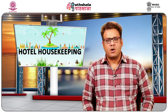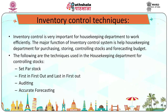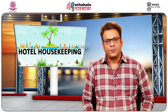Now we can discuss inventory control techniques. Inventory control is very important for the housekeeping department to work efficiently. The major functions of an inventory control system are to help the housekeeping department with purchasing, storing, controlling stocks, and forecasting budgets. The techniques used in the housekeeping department for controlling stocks are: number one, set par stock; number two, first in first out (FIFO) and last in first out (LIFO); third, auditing; and fourth, accurate forecasting. We will first discuss how to set par stock.